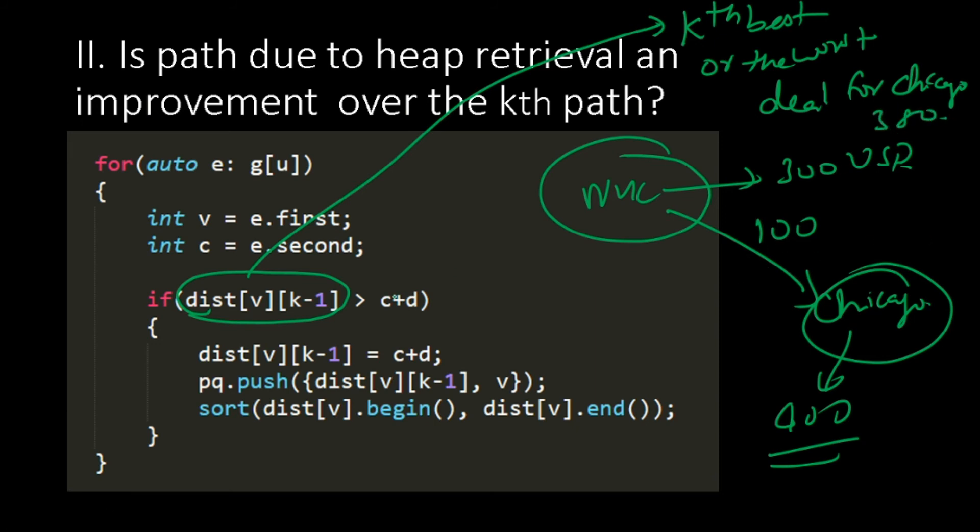If the worst deal for Chicago is $380, we don't need to do anything. So the worst deal for Chicago is $380 and $380 is not greater than $400. So we don't need to do anything.